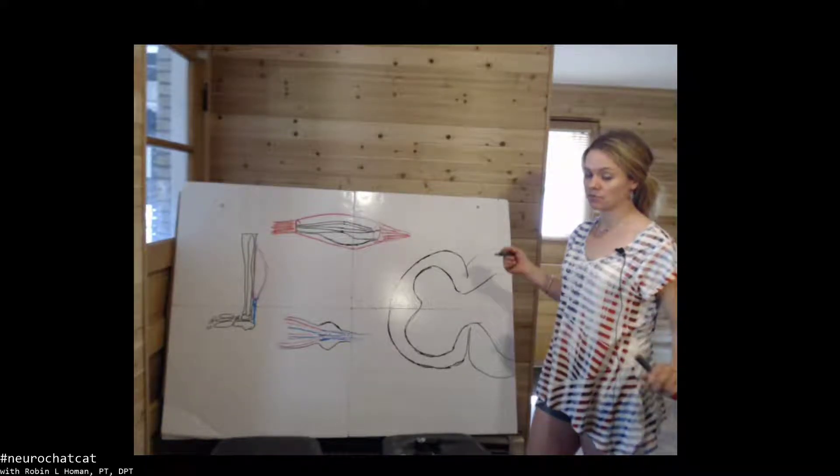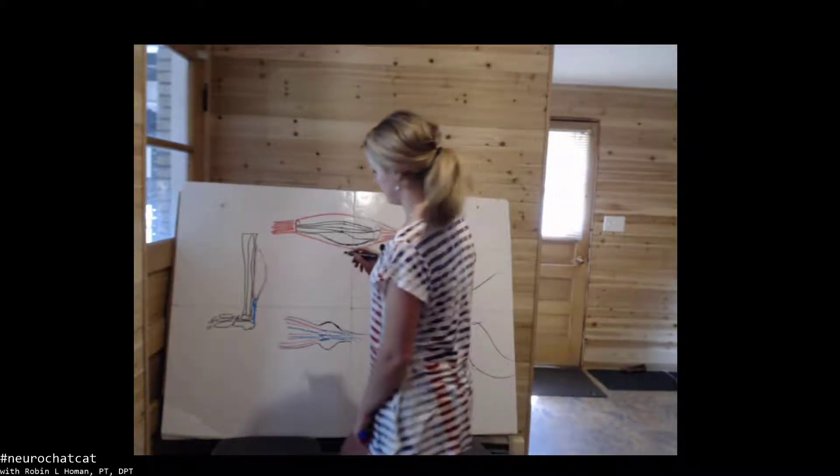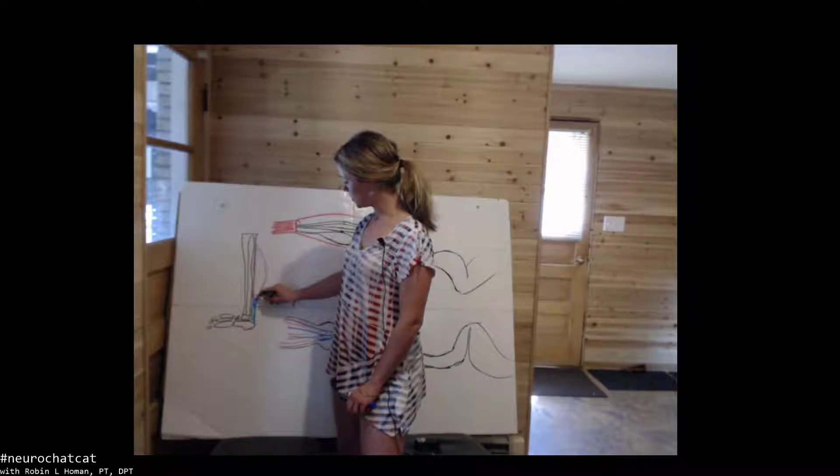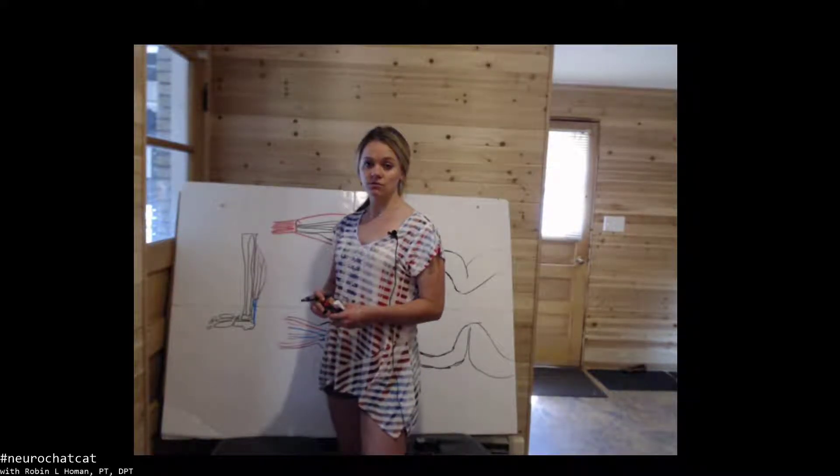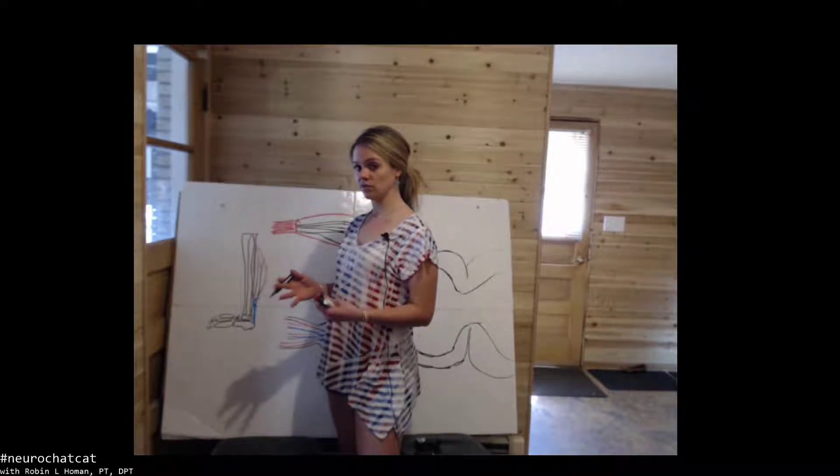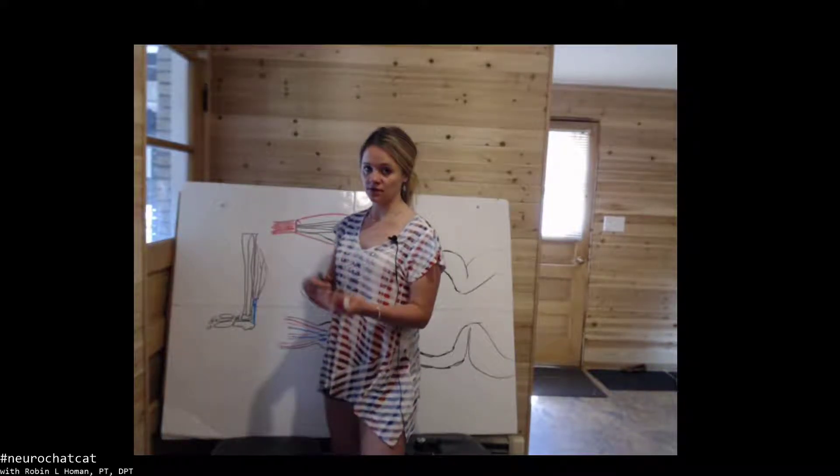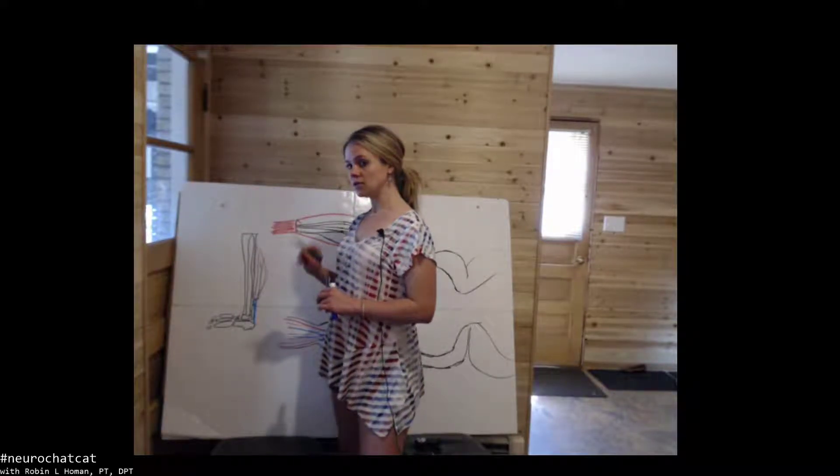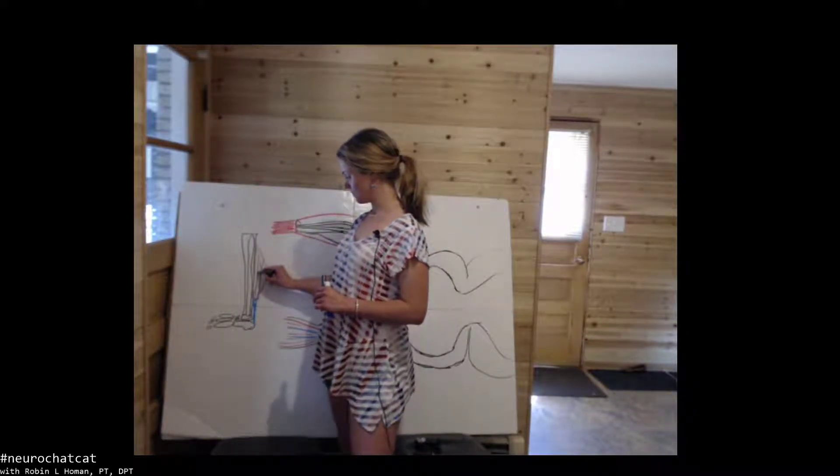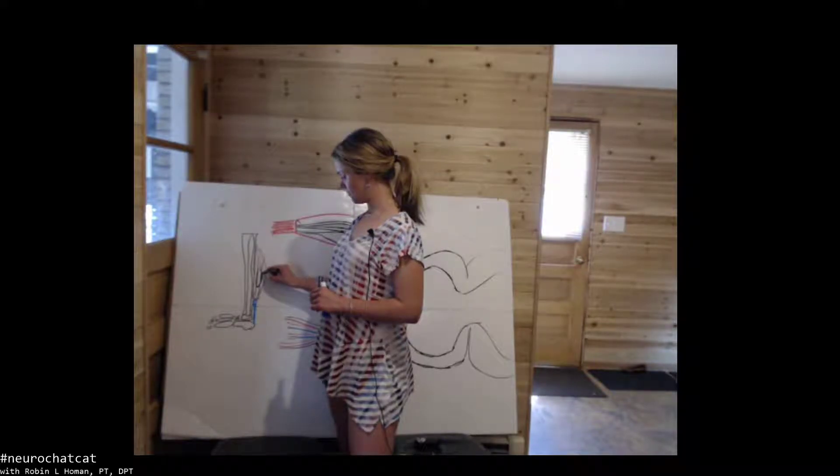So we have within our muscle belly, this is a soleus over here, we have these large fibers called extrafusal muscle fibers and they are the ones that promote concentric, eccentric and isometric contraction. And then we have specialized intrafusal muscle fibers that live within the muscle belly.